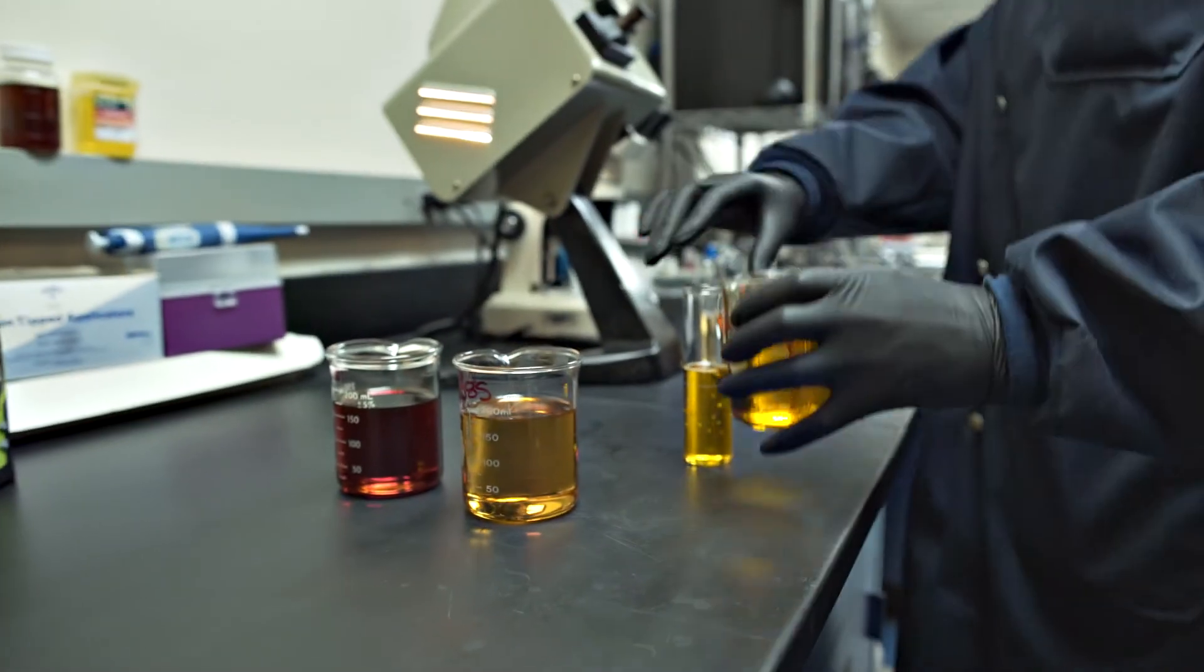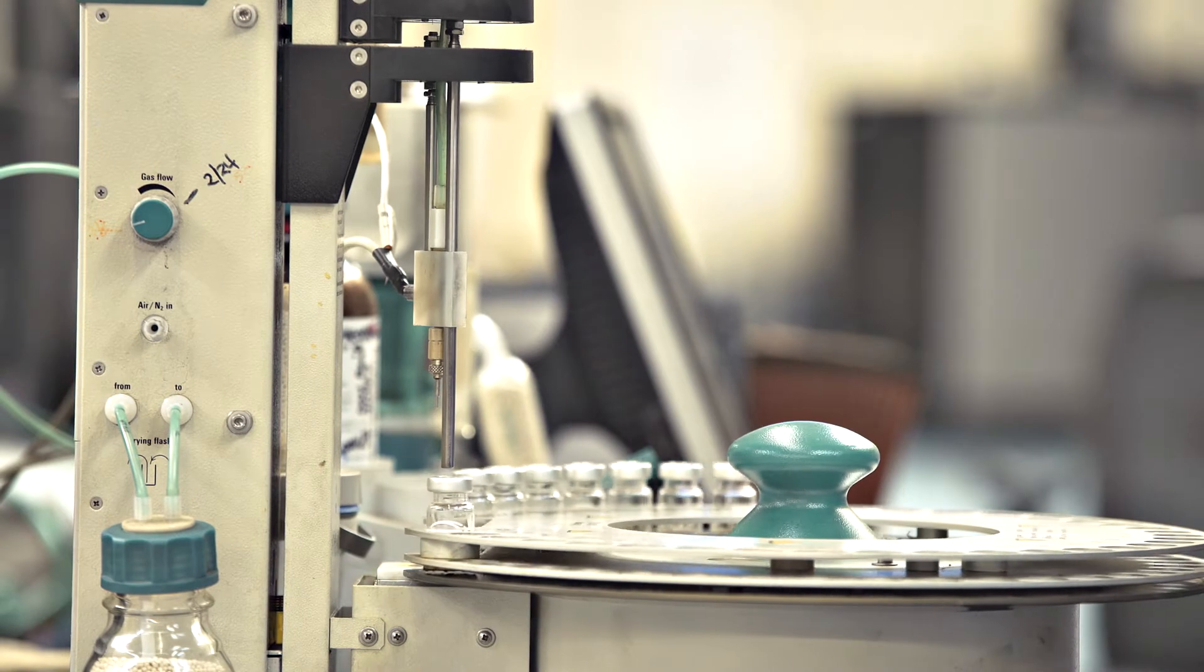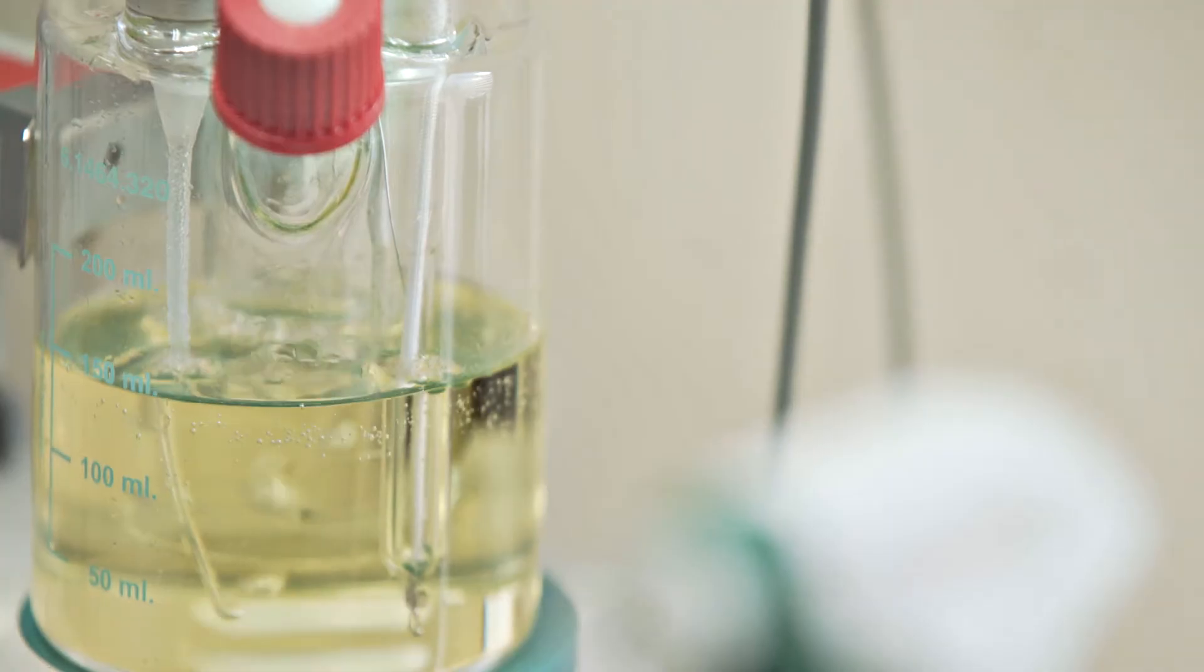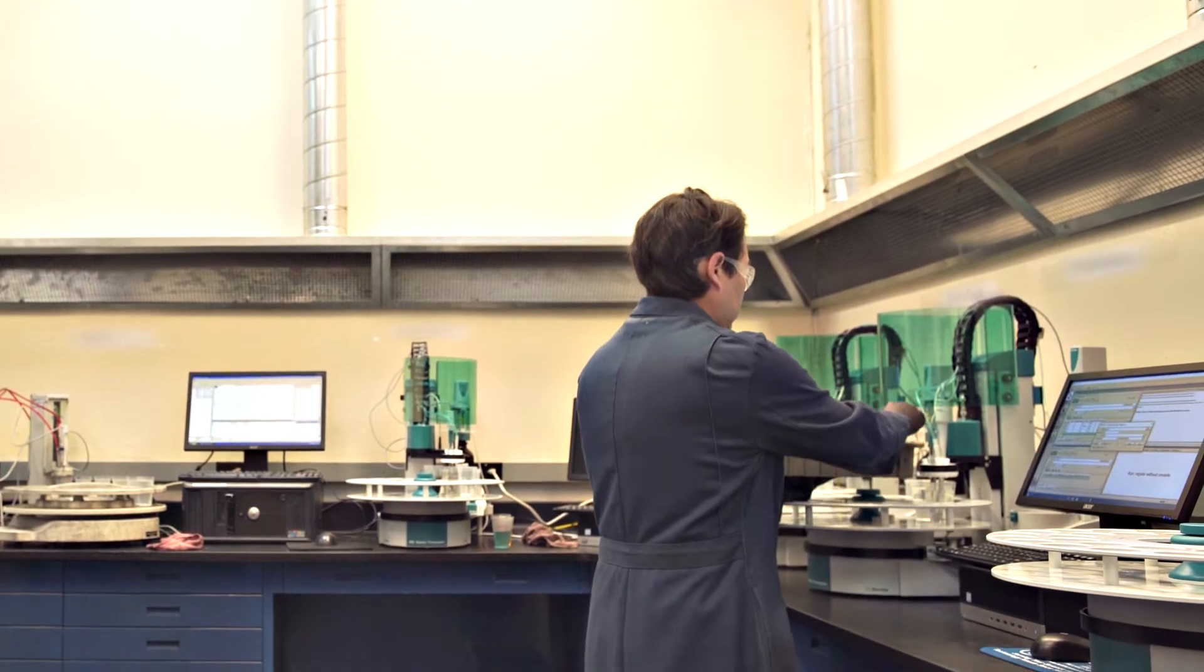These routine test parameters are used in various combinations to constitute ALS turbine oil test packages that are used for routine, quarterly, and annual monitoring of turbine oil circulating systems.